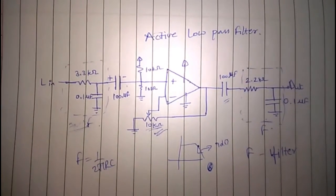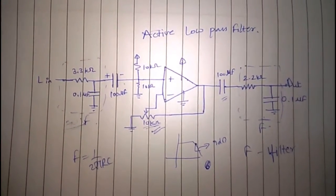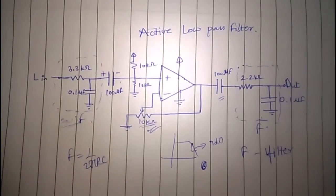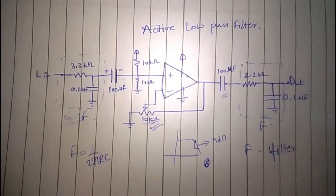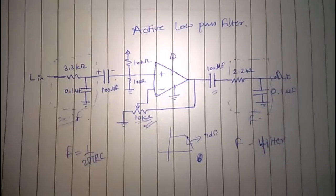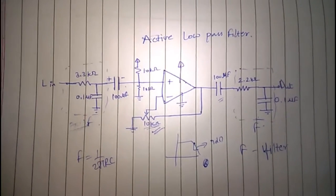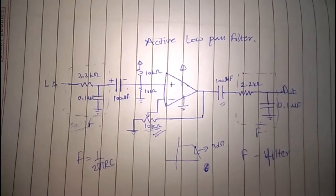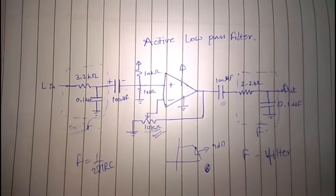So that's pretty much it. The beauty of this design is that you can actually cascade the same circuit multiple times and get a better characteristic for the low pass filter. Also, the LM324 chip has four operational amplifiers.